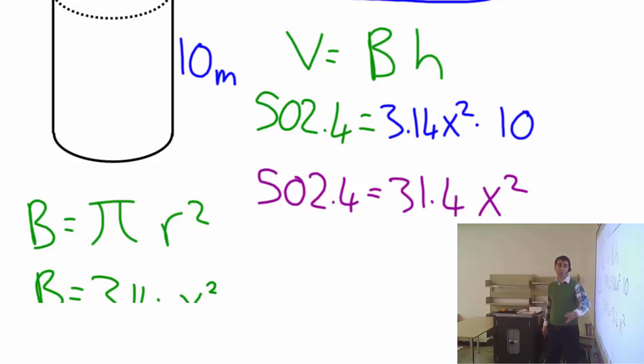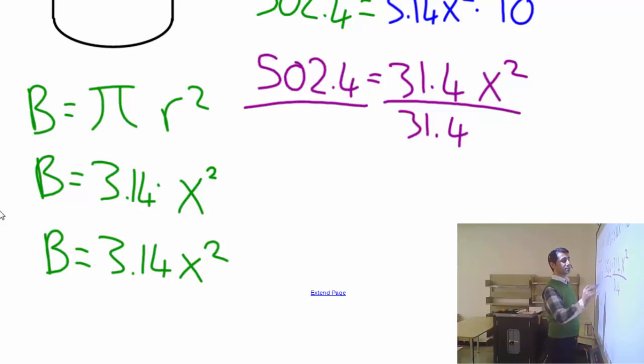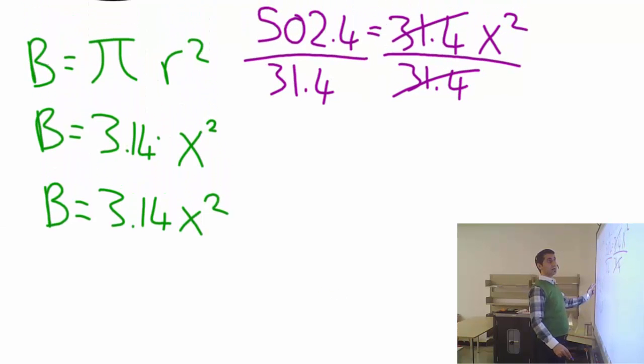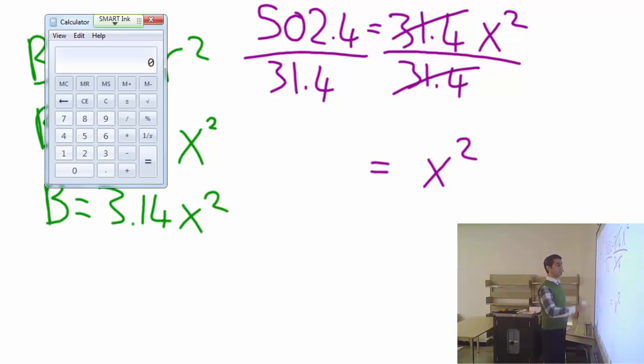I have no idea what I'm going to do here, but I know I'm going to get 4. Radius is supposed to be 4, so let's keep going. Now I want to leave usually I say x, leave x alone, but in this case I'm going to leave x squared alone. So I'm going to divide x squared with 31.4. I'm going to divide the other side with 31.4. So this will cancel out.